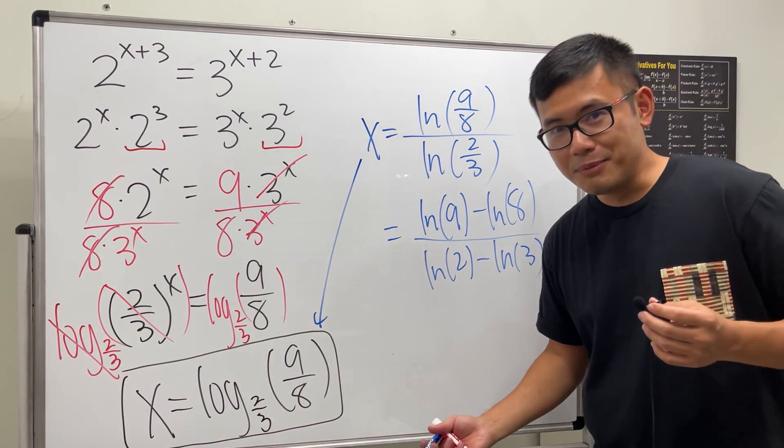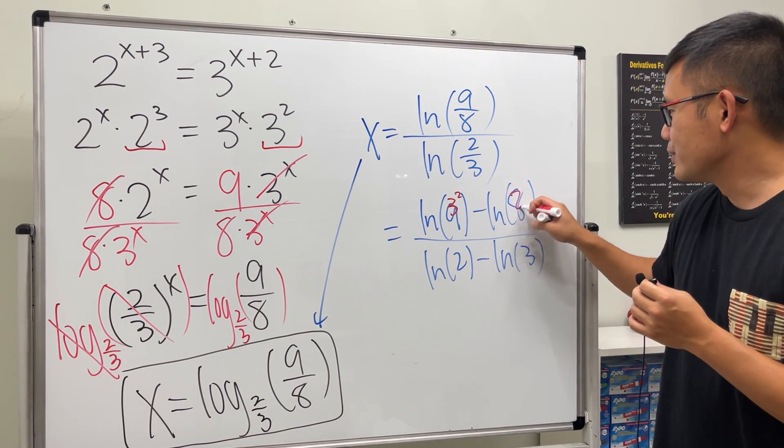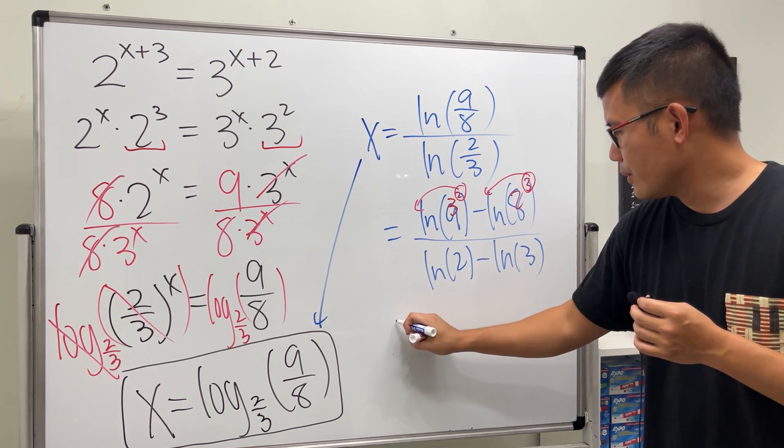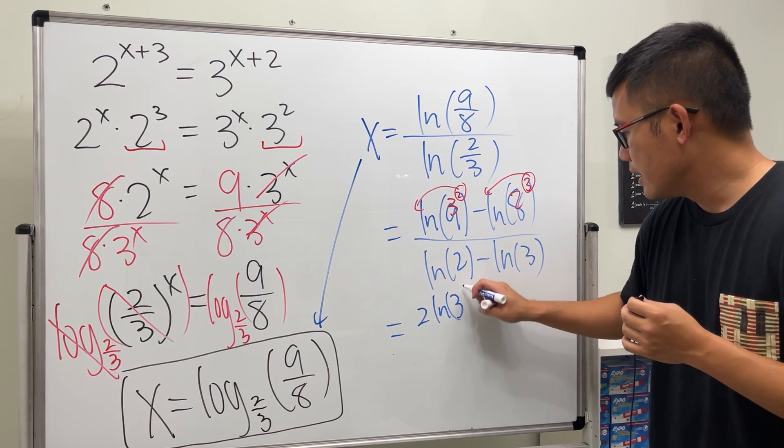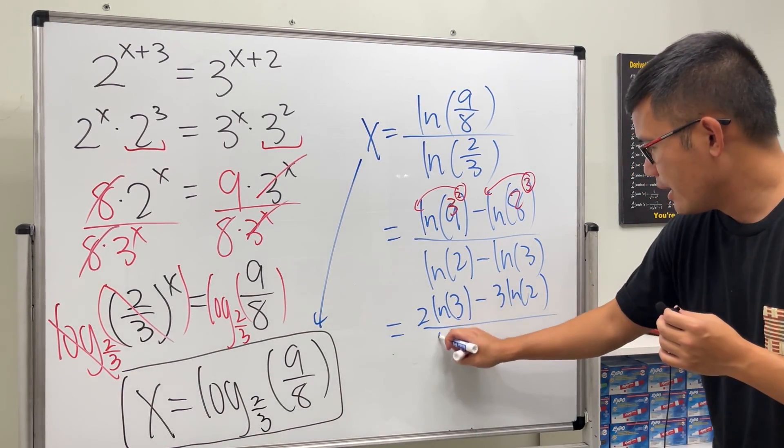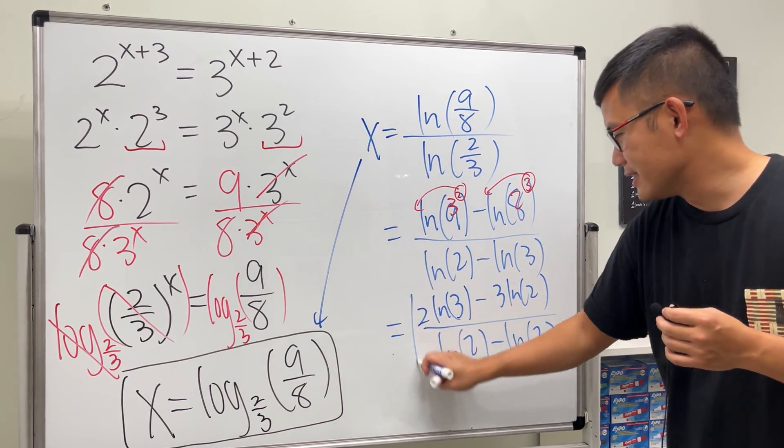You want me to simplify more? Okay fine. This is 3 to the second power, this is 2 to the third power, so we can put this to the front. So it looks like we have 2 ln 3 minus 3 ln 2 over ln 2 minus ln 3.